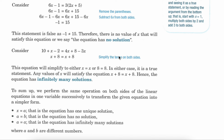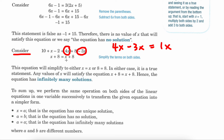Now here is an example of a problem where you have infinitely many solutions. 10 plus x minus 2 equals 4x plus 8 minus 3x. In this situation, they simplified 4x and negative 3x — 4x minus 3x is equal to 1x, so that's how they simplified it to just x. And 10 minus 2 is equal to 8, so that's how they got 8 on the left-hand side. So everything just got reduced to x plus 8 on the left-hand side and also x plus 8 on the right-hand side.